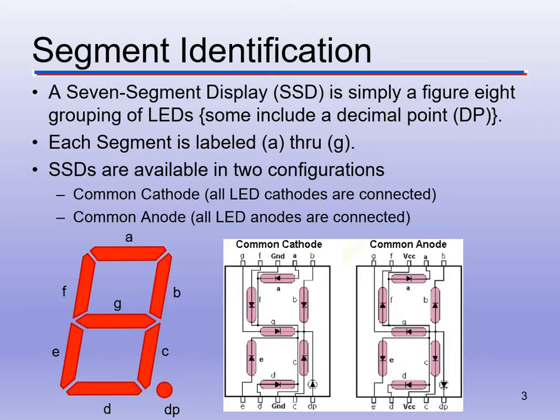This is a seven-segment display. It's called that because you have segments A, B, C, D, E, F, and G, plus a decimal point. We're not going to use the decimal point, but you can control it as well. It's important to have the data sheets since you need to know how to hook them up. A lot of digital clocks use these. We're limited with a seven-segment display in what letters we can produce, but we can do all the digits — very common for numeric applications.